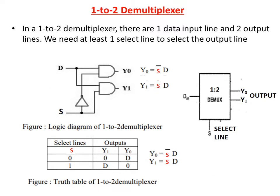1 to 2 D-multiplexor. From the name itself we can see the input is 1 and the output is 2. So 2 power 1 is equal to 2, that means selection line is 1. The input line is 1, considered as D, and the output lines are 2, considered as Y0 and Y1. So 1 selection input, 1 data input and 2 data outputs. This is the block diagram representation for D-multiplexor.